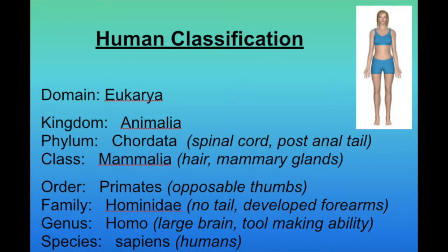Each of these groupings tells you something about the organism. For humans: we are in the domain Eukaryota, which means we're made of complex cells that interact and work together. We're in kingdom Animalia because we're animals. We're in phylum Chordata because we have a spinal cord and a post-anal tail — our post-anal tail is your tailbone, which curves under just past your anus, and if you break it, you'll know it hurts a lot. We're mammals because we have hair and mammary glands, and both males and females have mammary glands.